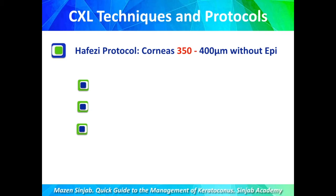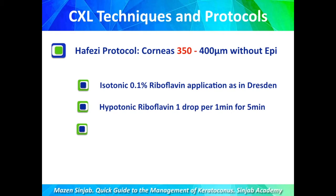The Hafizi protocol is used when corneal thickness is between 350 and 400 microns without the epithelium. We start as in the Dresden protocol — isotonic riboflavin for 30 minutes — then apply one drop per minute of hypotonic riboflavin for five minutes to swell the stroma. This can be extended one or two minutes until thickness exceeds 400 microns, then UVA is applied as in Dresden, with no additional drops needed during UVA.